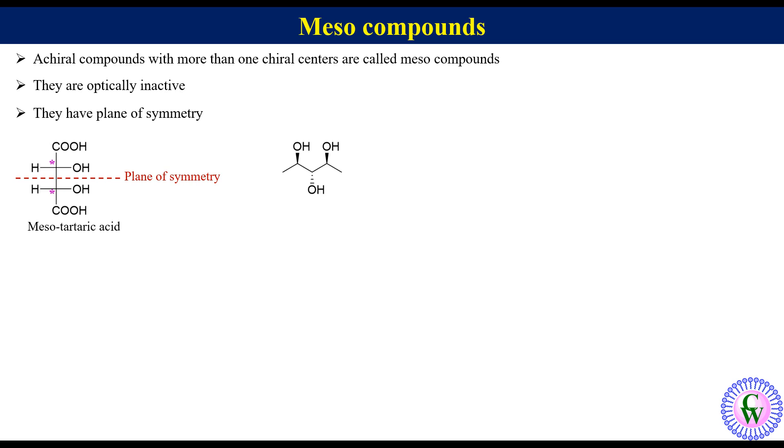This is an example of molecule having three chiral centers. It has a plane of symmetry, so this molecule is also an example of meso compound.